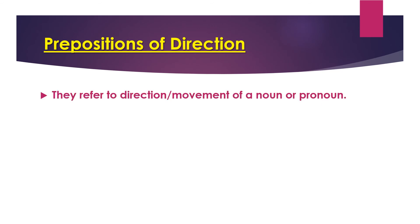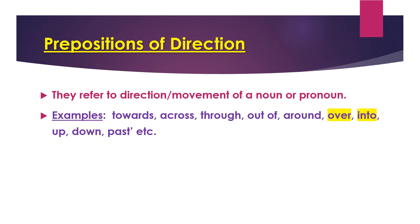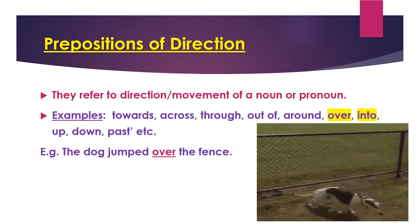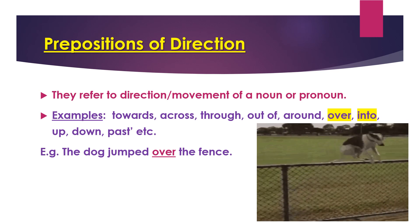Prepositions of direction refer to the direction or movement of a noun or pronoun in the sentence. Examples include: towards, across, through, out of, around, over, into, up, down, past, etc. All these involve movement. Note that 'over,' discussed earlier as a preposition of position, can also imply movement. For example, the dog jumped over the fence — it was on top and there was movement involved.